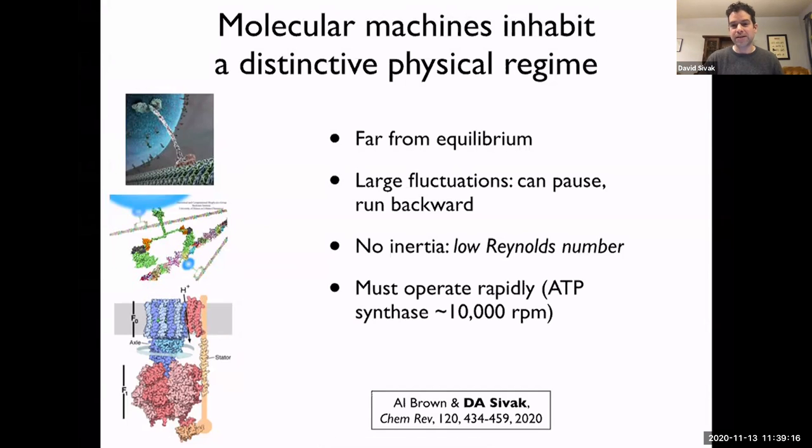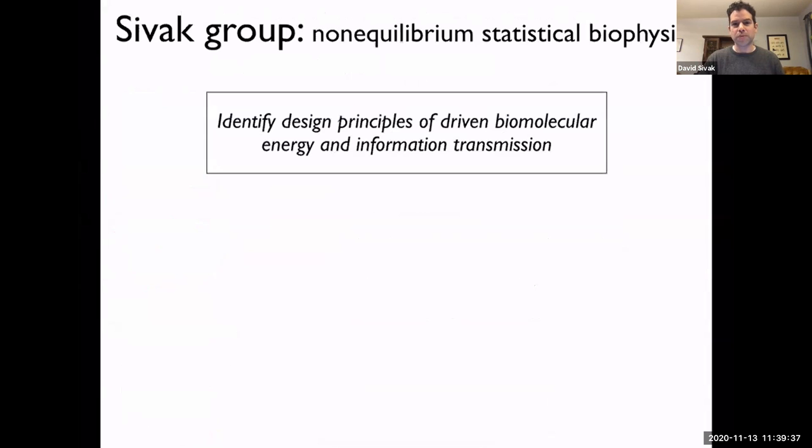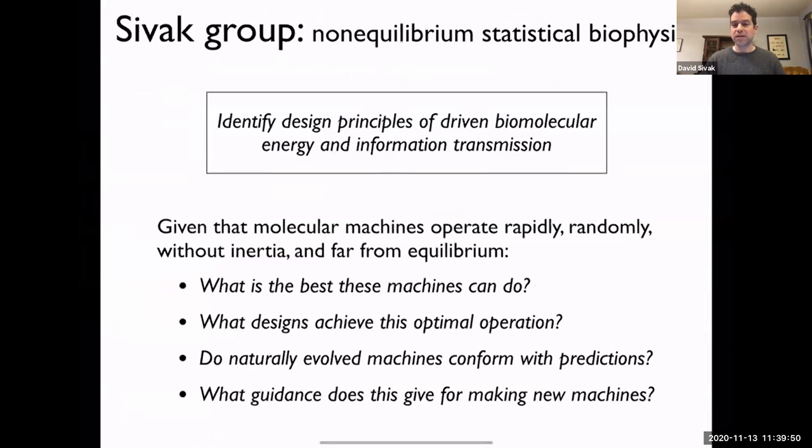And finally, these machines have to operate rapidly. ATP synthase clicks over at something like 10,000 RPM. So from an undergrad thermal perspective, we can't make appeals to a Carnot cycle to understand how it's behaving. Some quasi-static analysis is not sufficient to really understand how they behave. Based on these observations, this kind of motivates the work that my group does, trying to understand what are design or engineering principles for how you achieve out of equilibrium biomolecular energy and occasionally information transmission. What are the physical limits on what they can achieve? What kinds of designs actually reach or saturate these limits? And what guidance does this give for making new novel machines?